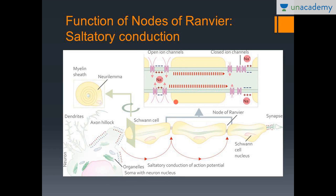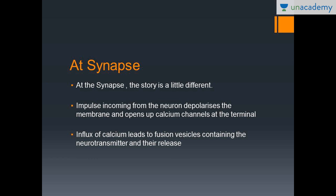Regarding the myelin sheath and nodes of Ranvier: myelin acts as insulation, so the impulse jumps from one node of Ranvier to the next, skipping the insulated internodal segments. This is known as saltatory conduction. It greatly increases the speed of impulse transmission along the length of the neuron.